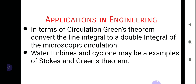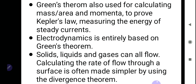In terms of circulation, Green's theorem converts a line integral to a double integral of the microscopic circulation. Water turbines and cyclones may be examples of Stokes and Green's theorem. Green's theorem is also used for calculating mass, area, and momenta. Using Green's theorem we can prove Kepler's law, and it is used to measure the energy of steady currents. Electrodynamics is entirely based on Green's theorem.